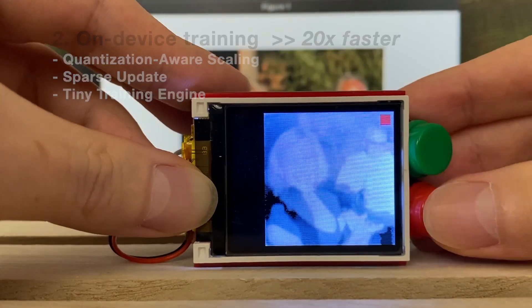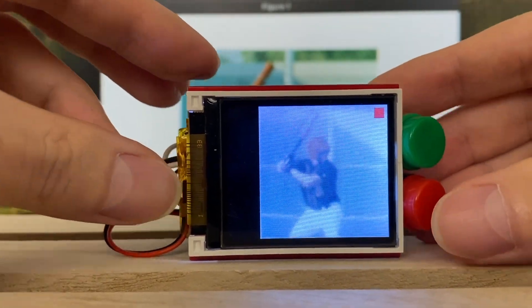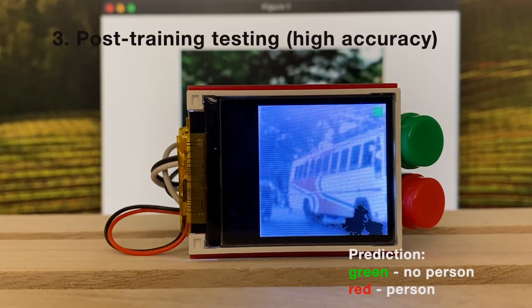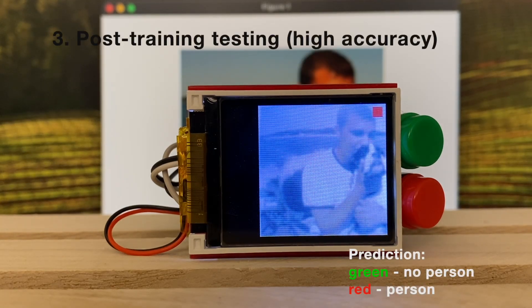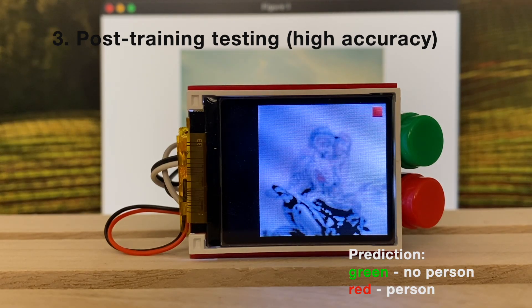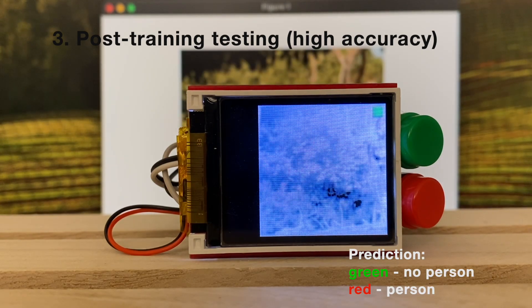As the training goes on, we can find that the accuracy is generally getting better. The training is now finished. After training, we test the model again on the original test set. Now you can get 100% accuracy, showing the effectiveness of the training.